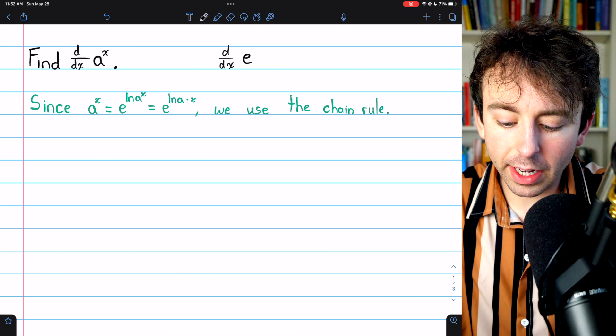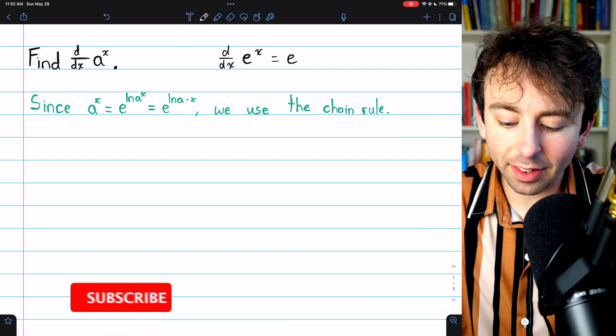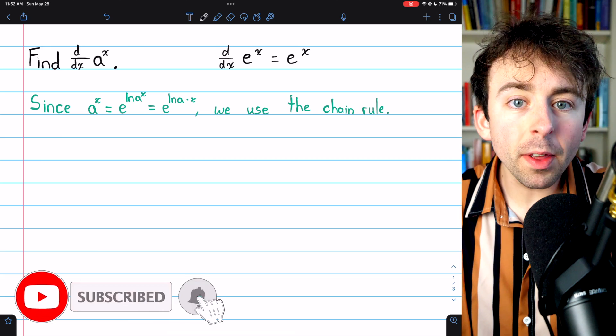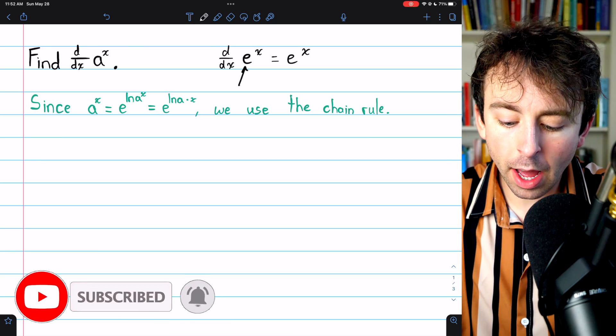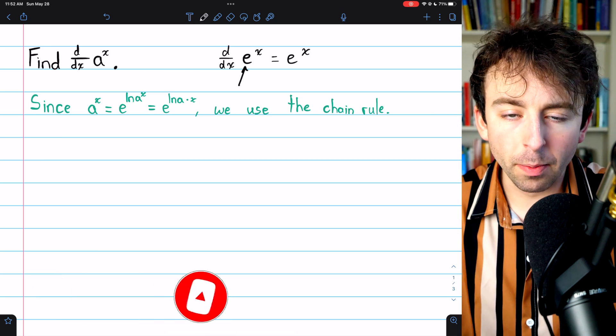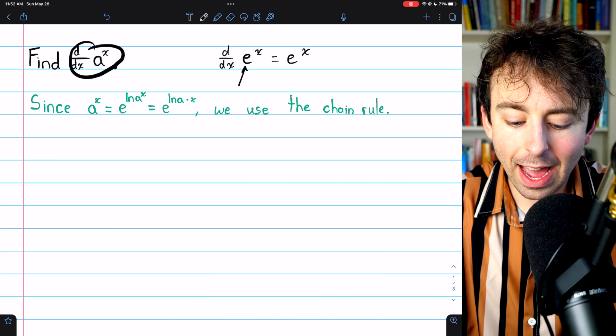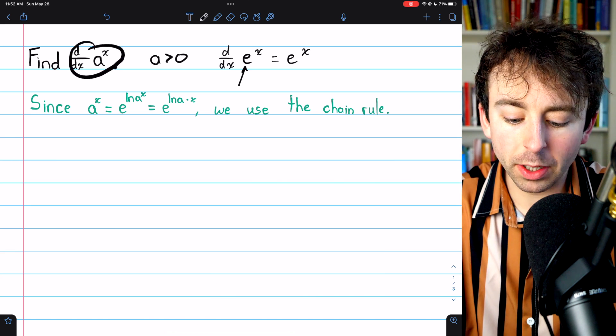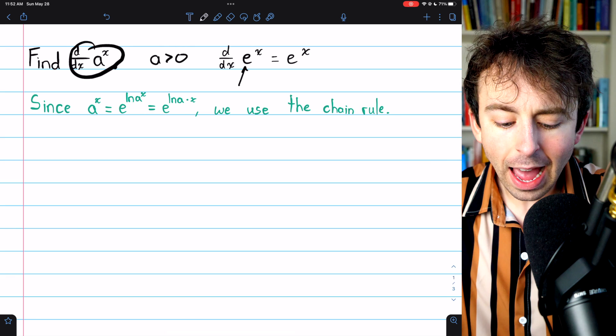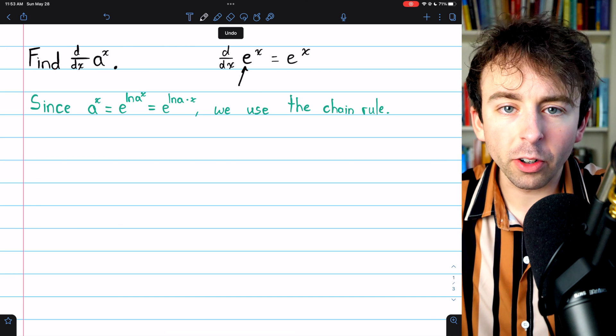We've already discussed how the derivative of e to the x is just e to the x, but what if the base is some number other than e? Consider the more general function a to the x, where a is just a real number greater than 0. How do we take the derivative of a function like this?